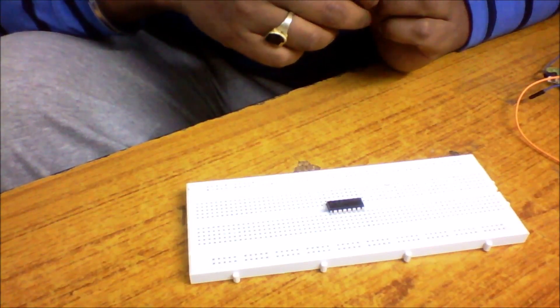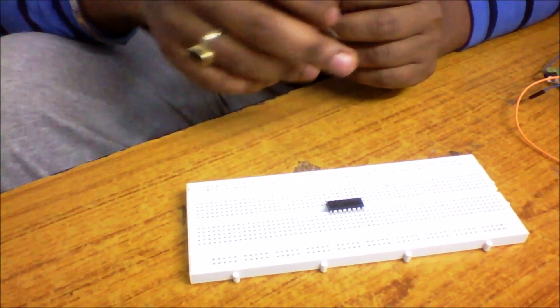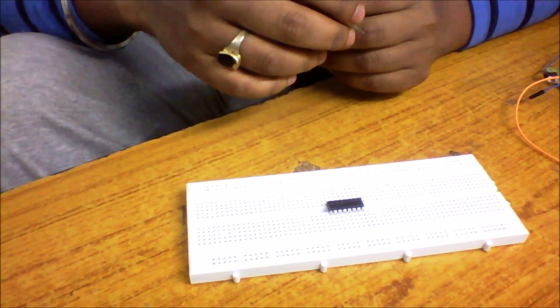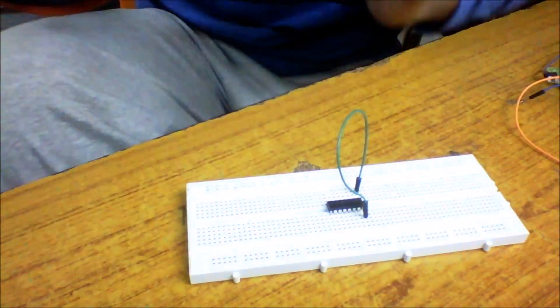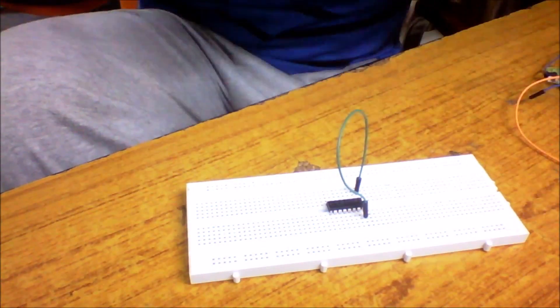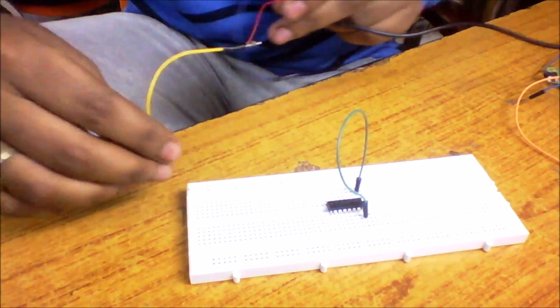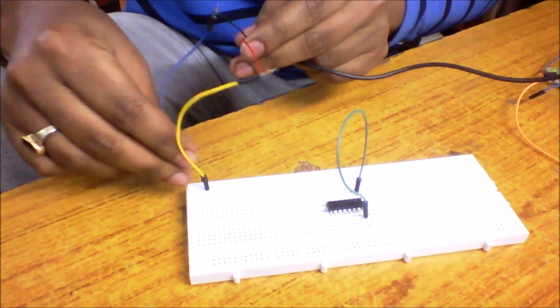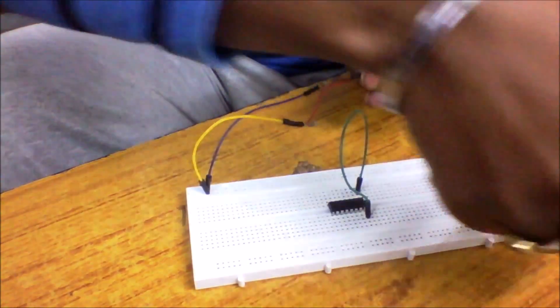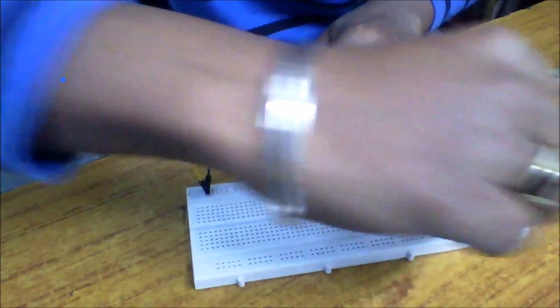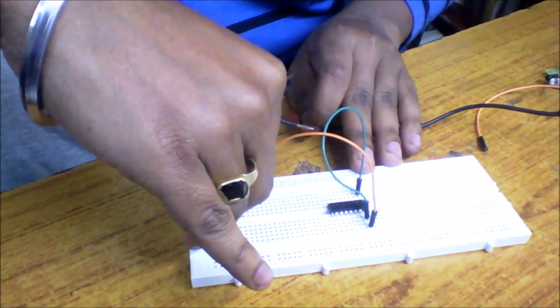I'm going to connect the L293D motor driver IC now. The pin configuration is easily available on the internet and in my previous videos. Pin number 1 and pin number 16 should be given a 5 volt supply, so I will short circuit this one and give the 5 volt supply from the charger. I'll put the positive here, the negative over here. Okay, it's done - pin number 1 and pin number 16 are done.